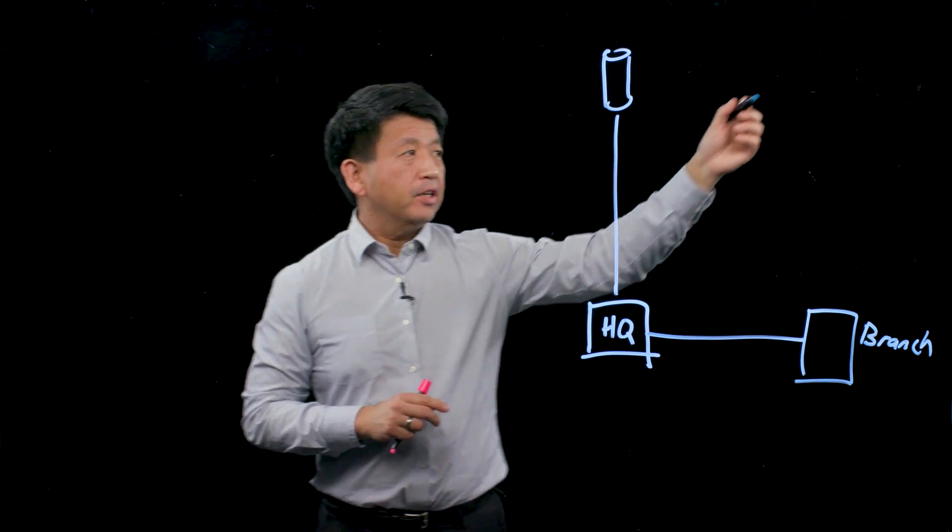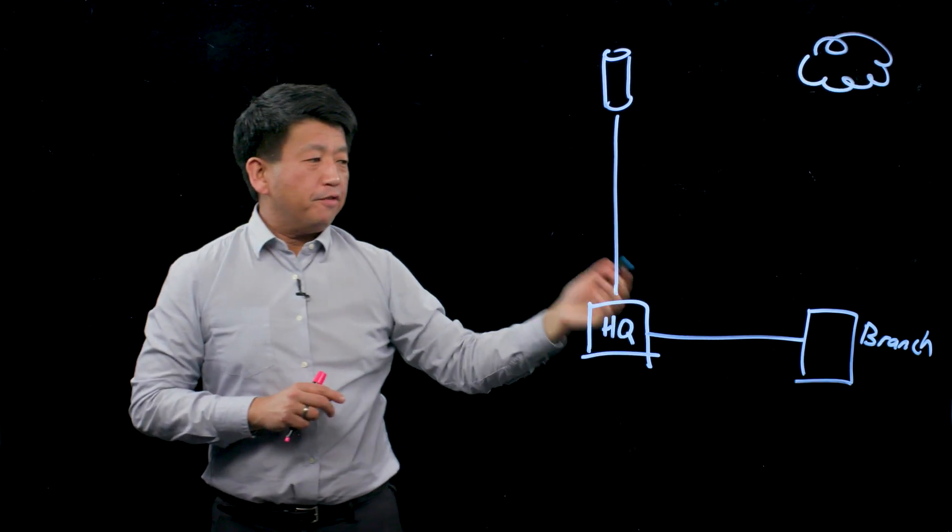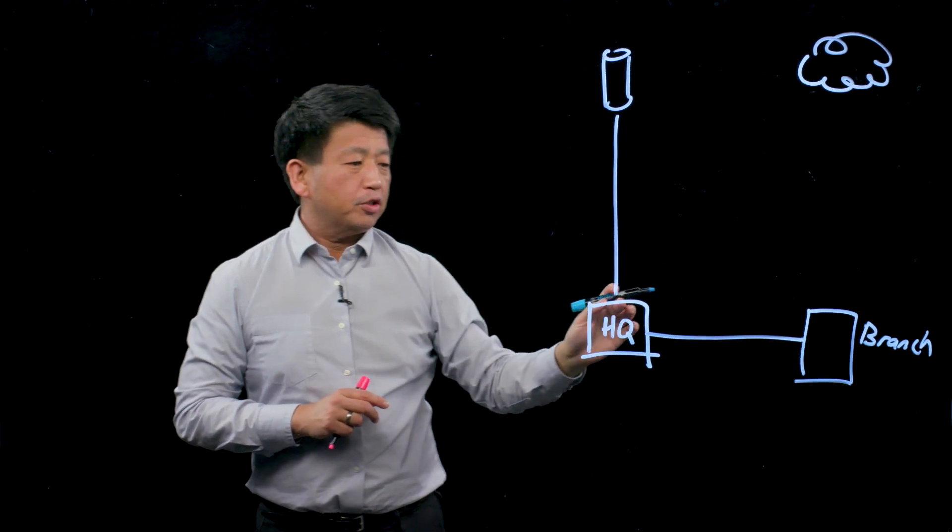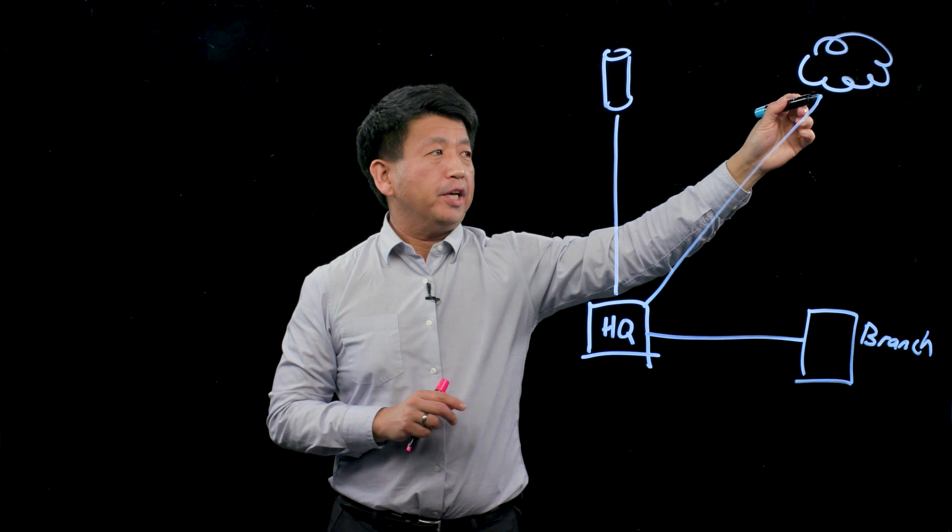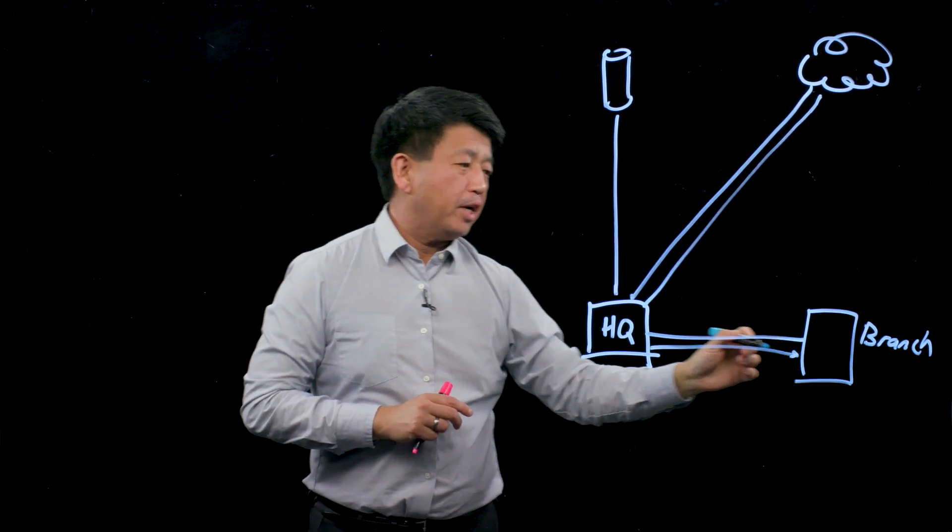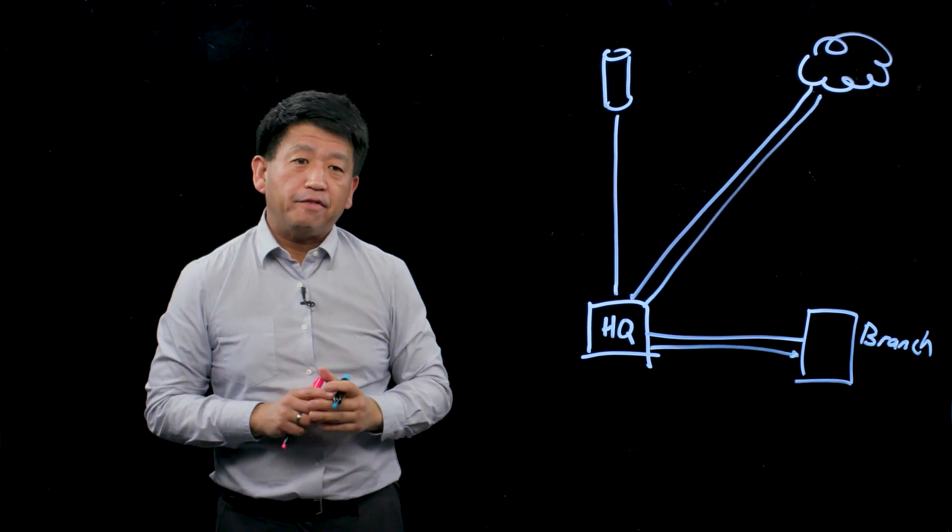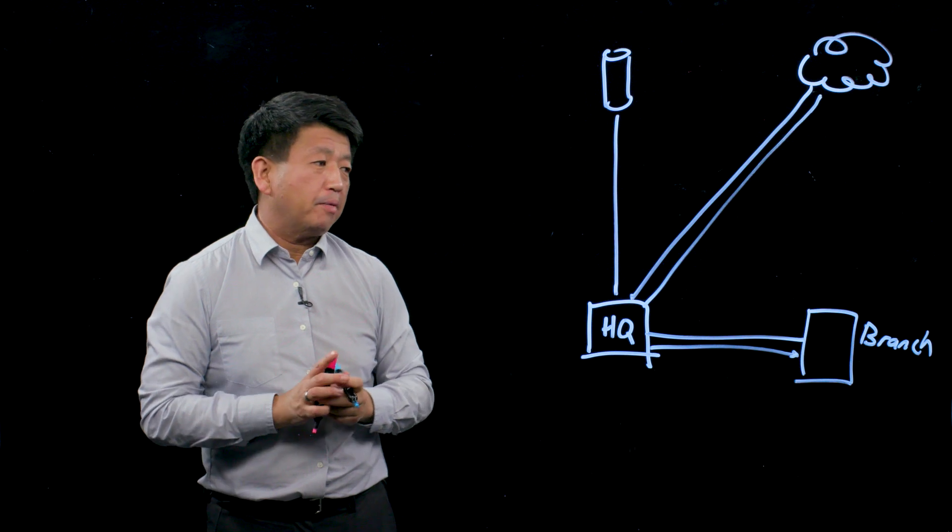Now what happens when you add cloud to the mix? If you're going over the wide area network to get to headquarters to go back out to the internet and then back again in order to get your traffic back to the branch office, it's really an inefficient path for traffic.